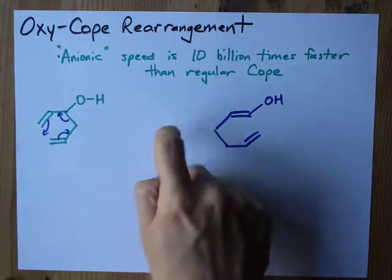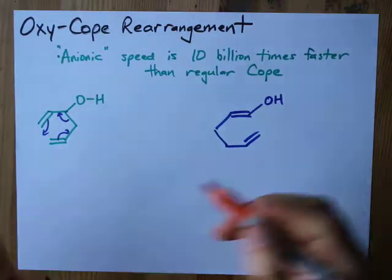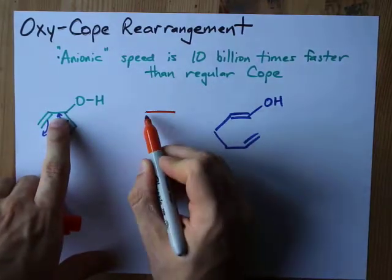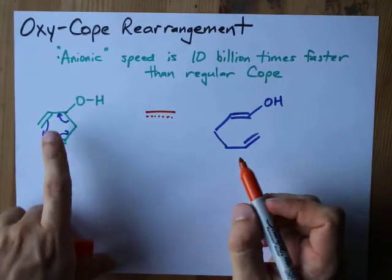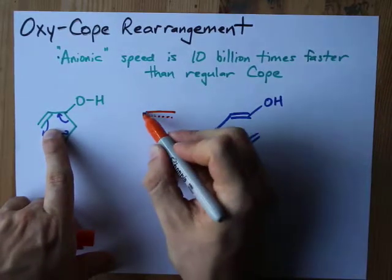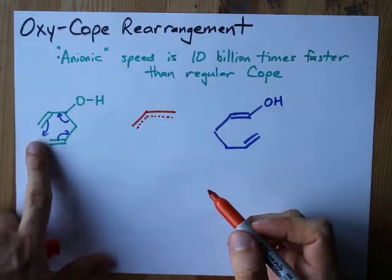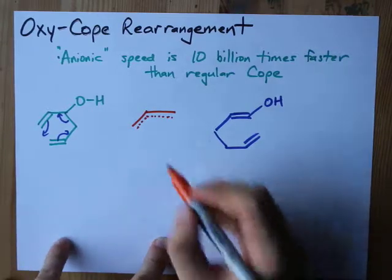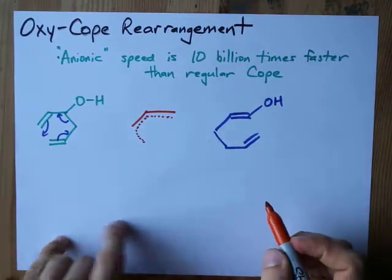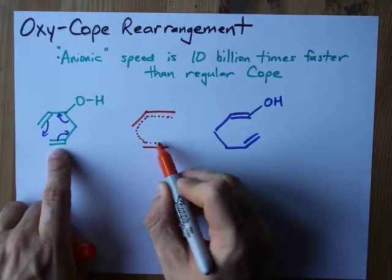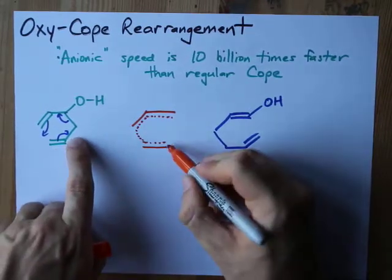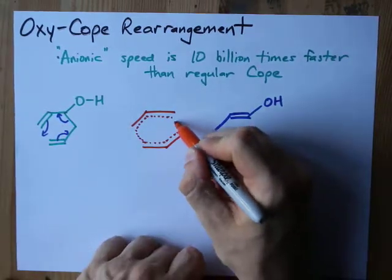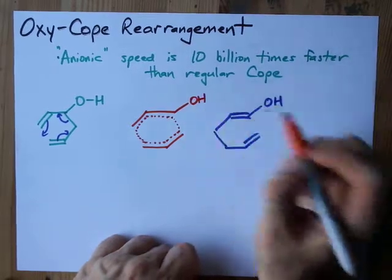Now for the transition state: the top was single and became double, so I'm going to draw that as one and a half. That was double and it became single, so it should be one and a half as well. That was bond order zero — not bonded at all — and then it became single bonded, so the halfway point is a half bond. Double to single is one and a half. Single to double is one and a half. Single to none is also worth a half. And the OH stays here as well.